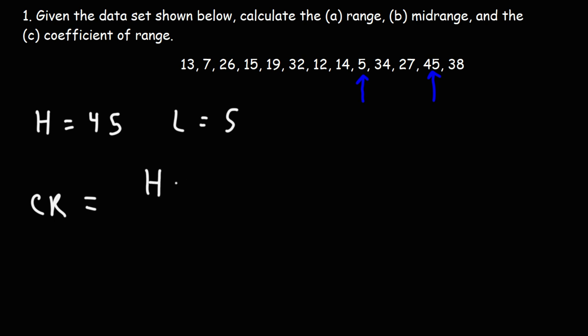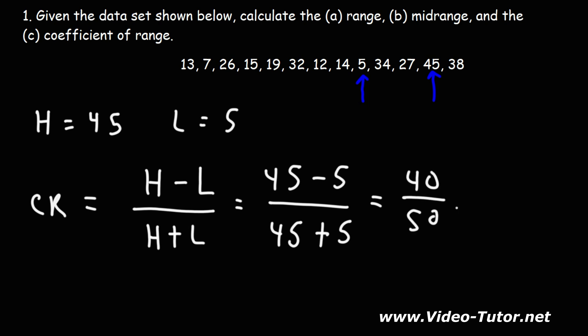It's going to be the highest value minus the lowest value, which is the range, divided by the highest value plus the lowest value. So it's 45 minus 5 over 45 plus 5. So this is going to be 40 over 50.